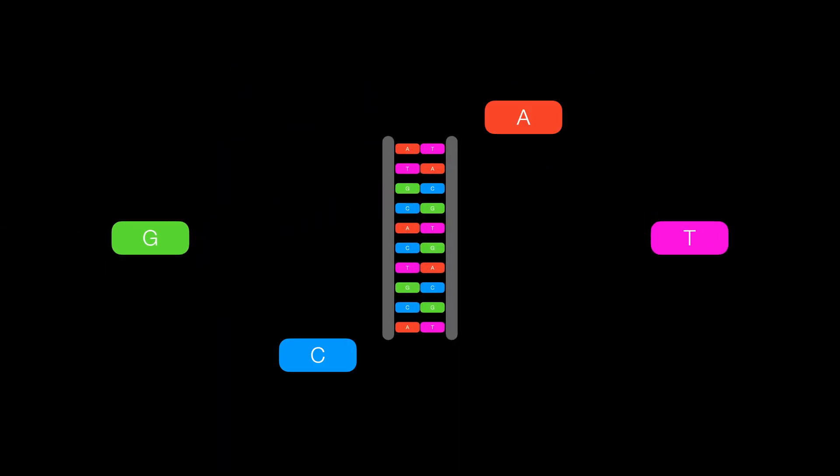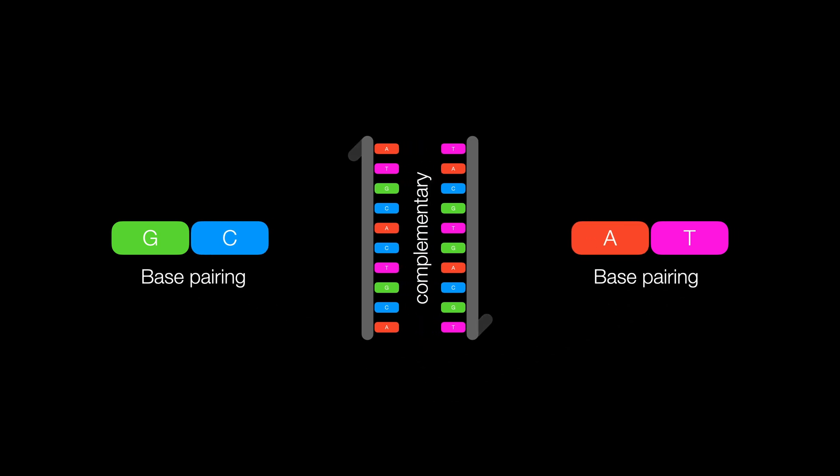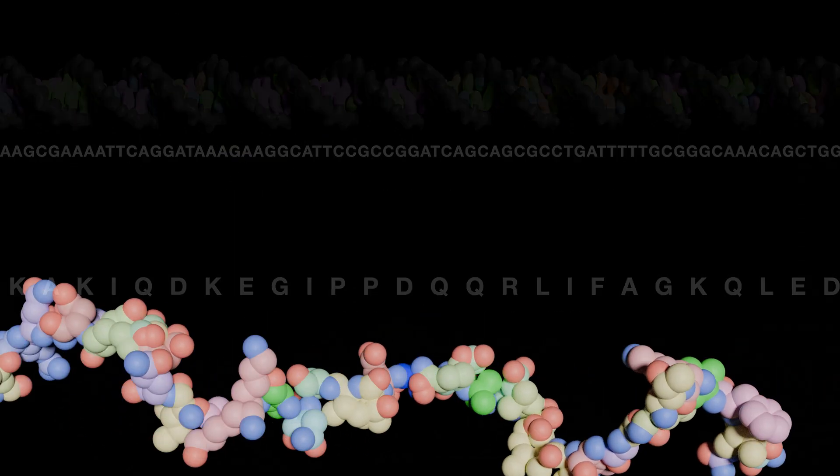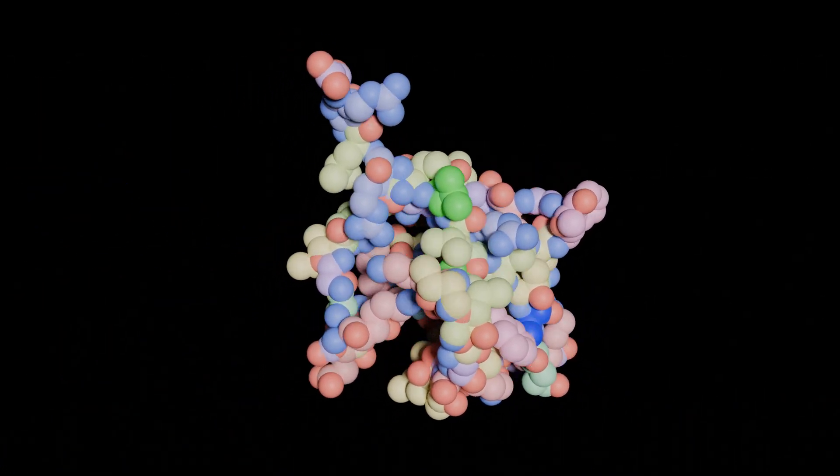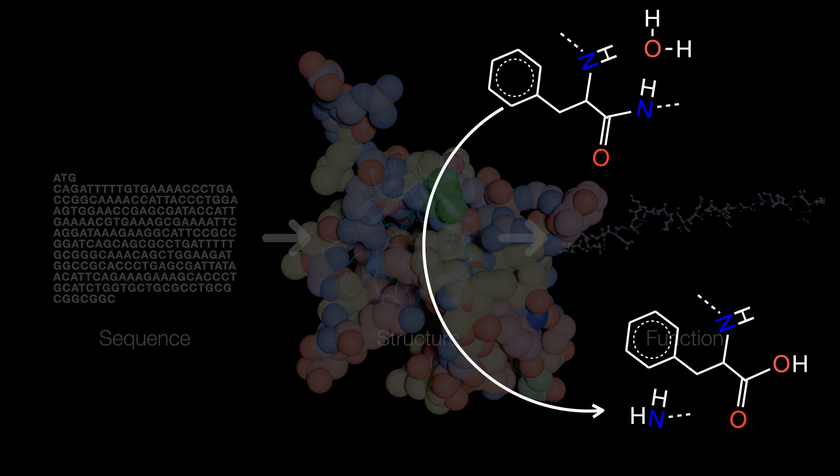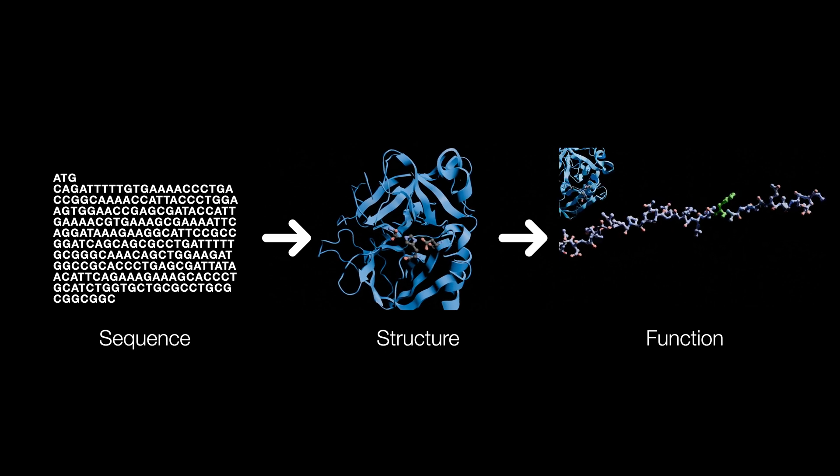All proteins are made from linking amino acids together. There are 20 canonical flavors out there, just like there are four bases of DNA. Each flavor has special properties which interact with one another to give the protein its structure. Then that structure gives rise to its function. Keep this in mind - this is a very important idea in the field of proteins.